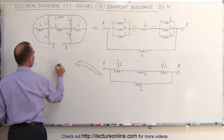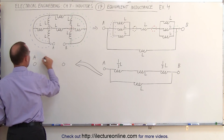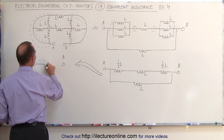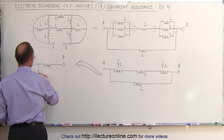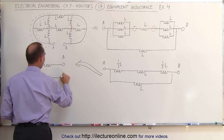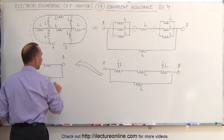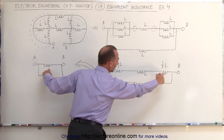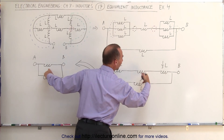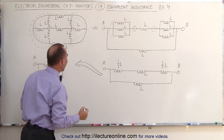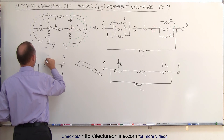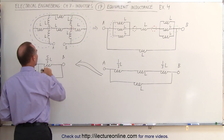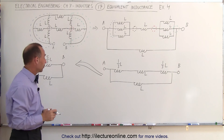Let's go ahead and redraw the circuit. Going from A to B, we can either go through this single equivalent inductance or we can go through this one. This one is still L, and this top one — simply these three combined — is one and two thirds L, or five thirds L. A whole plus two thirds gives you five thirds.